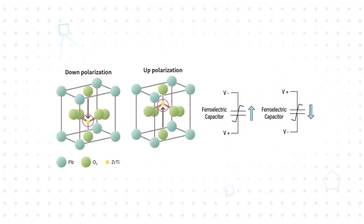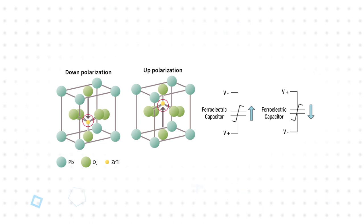Infineon FRAM is a non-volatile memory based on a ferroelectric capacitor made from a class of ferroelectric materials known as PZT. At the center of the material's crystal structure is a cation that has two equal and stable low-energy states: up-polarization and down-polarization. The cation can be moved between these two states by applying an electric field.